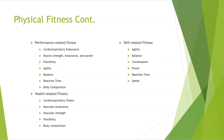Performance-related fitness includes cardiorespiratory endurance, muscle strength, endurance and power, flexibility, agility, balance, reaction time, and body composition. Health-related fitness includes cardiorespiratory fitness, muscular endurance, muscular strength, flexibility, and body composition. Skill-related fitness includes agility, balance, coordination, power, reaction time, and speed. Notice how some of these components appear in more than one category.